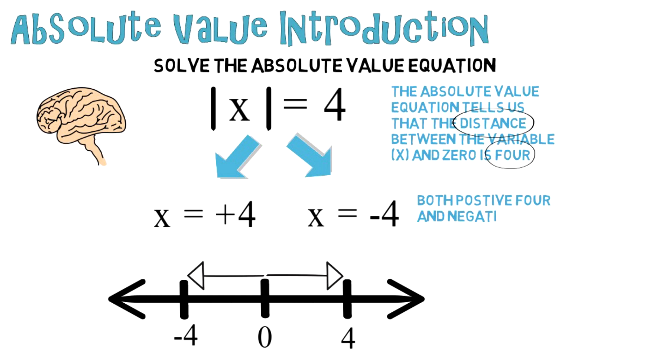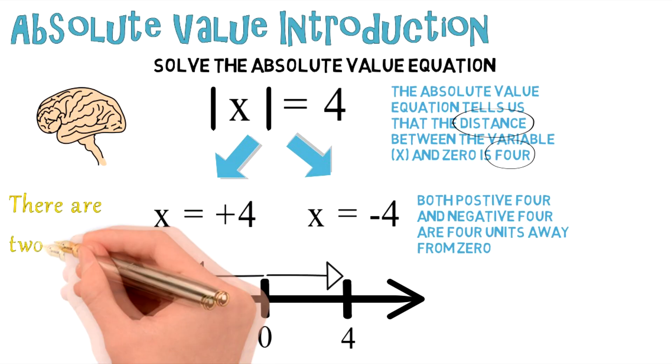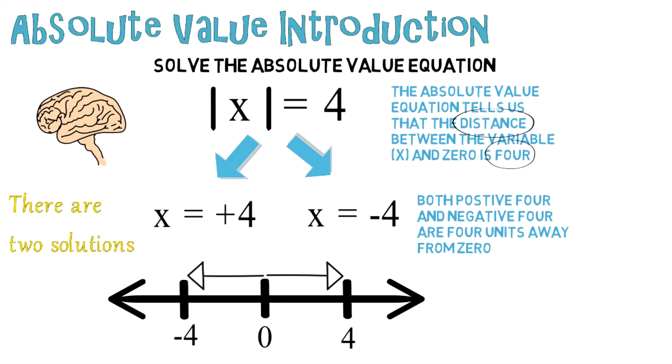Both positive four and negative four are four units away from zero. So in this case, there are two solutions.